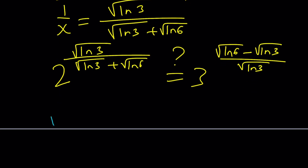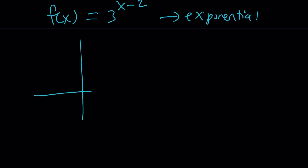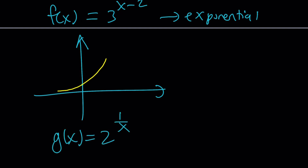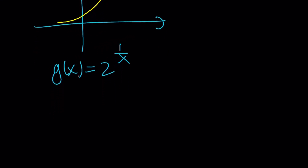Let's look at these from a more functional or calculus perspective, which is going to give us a lot of good insights. Consider the first function f of x as 3 to the power of x minus 2 — this is an exponential function. Graphing is fairly easy: if x equals 0, you get 3 to the power of negative 2, which is 1 over 9. As x approaches infinity, y approaches infinity; as x approaches negative infinity, y approaches 0. So it's always increasing. The second function g of x equals 2 to the power of 1 over x is actually pretty interesting because it's not just an ordinary exponential. We have to look at a couple of different things here, such as limits.